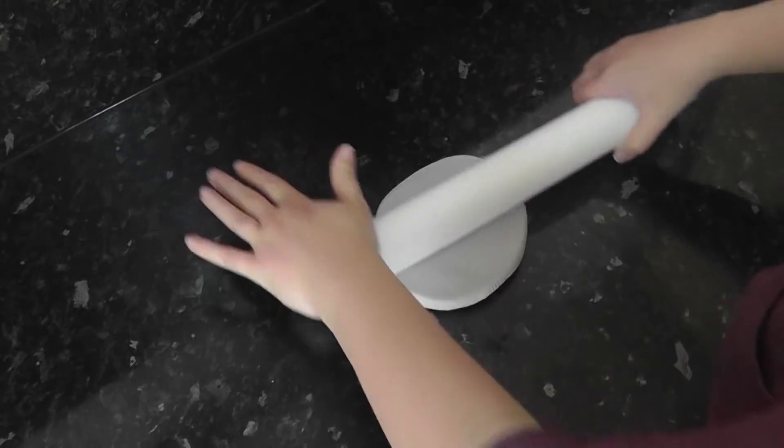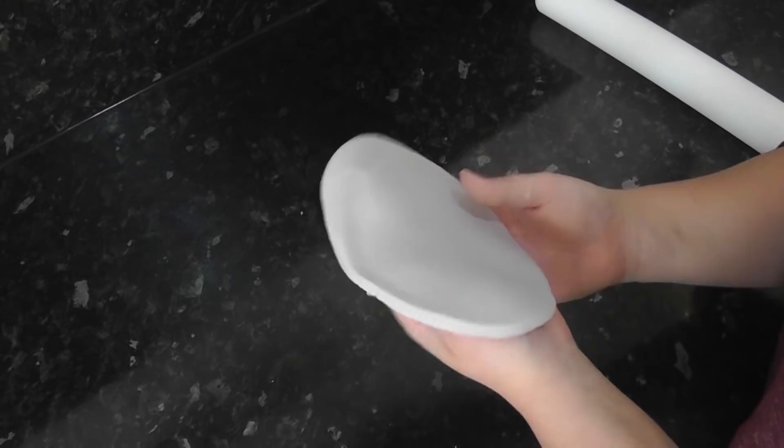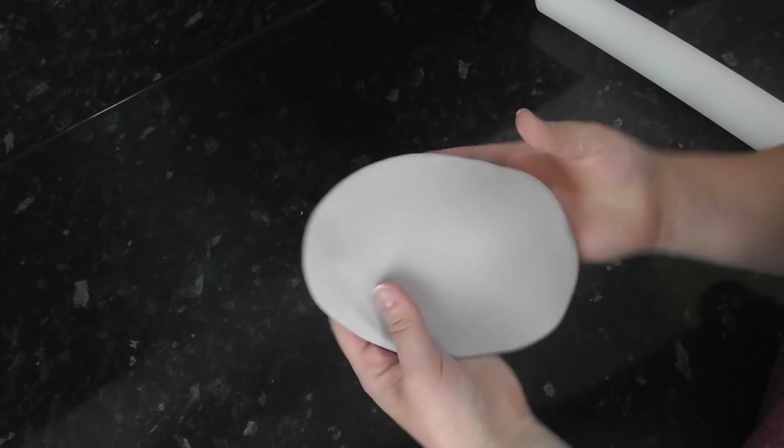First, start with your base color. I was going for a whitewashed grey, so here I've got a ball of grey sugar paste. You want to roll this out quite thickly, at least two to three times as thick as you want your finished panel to be.